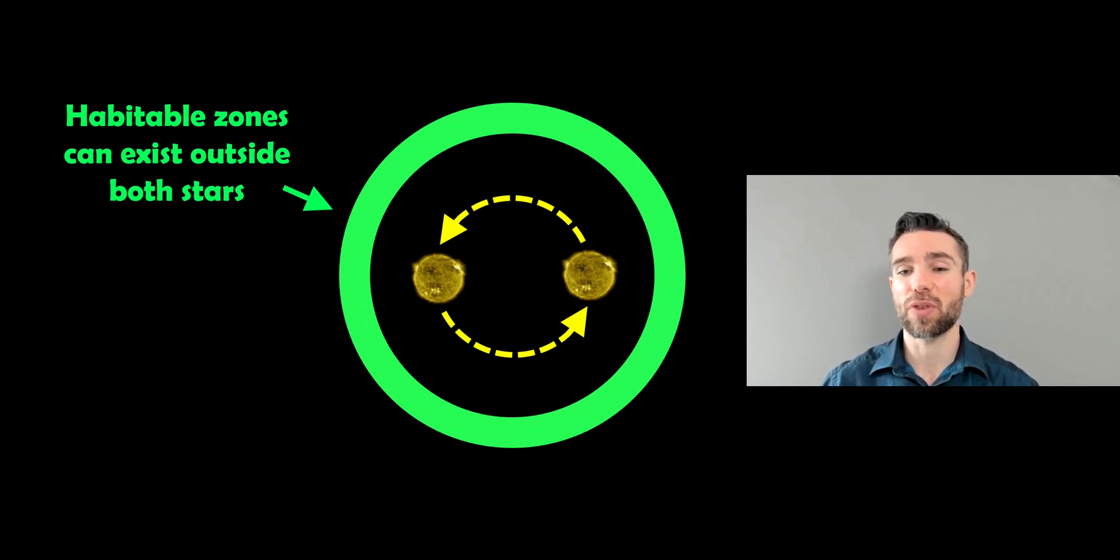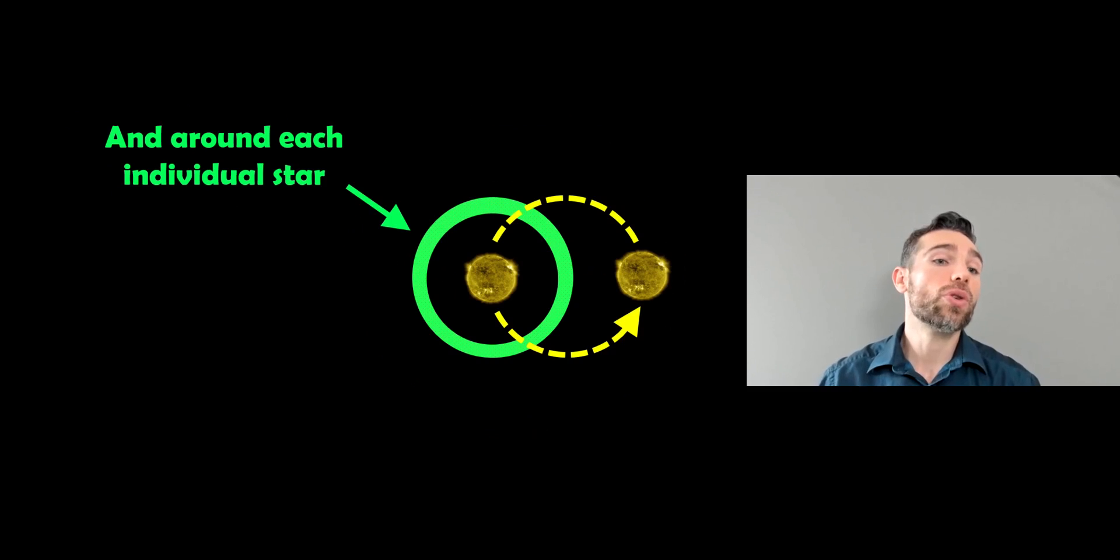So again, around the outside looks fairly similar. You can also get this zone around a single star. So around a single star, you'd have it like this.